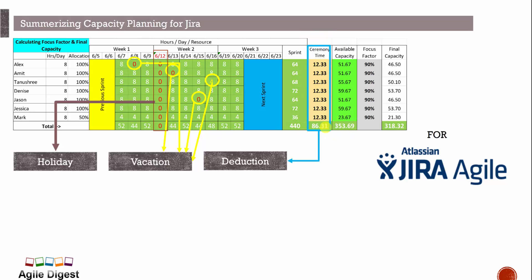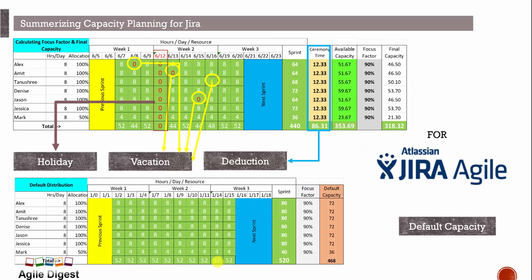The default capacity in Jira will only calculate with the focus factor applied. The full capacity without vacations or ceremonies would be 72 hours for everyone and 36 hours for Mark. We'll enter these values into Jira, see how capacity is displayed, then create and assign tasks to see how capacity updates.